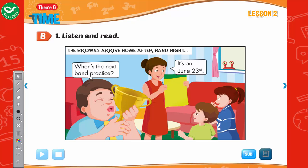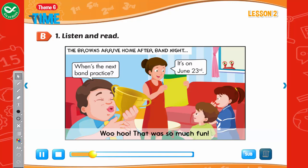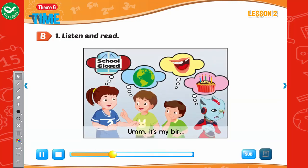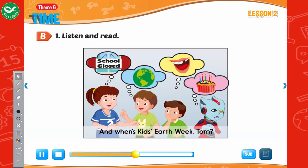Listen and read. The Browns arrive home after band night. Woohoo! That was so much fun! When's the next band practice? It's on June 23rd. When's the last day of school? It's on June 2nd, Mom. And when's Kids Earth Week, Tom? It starts on June 8th.